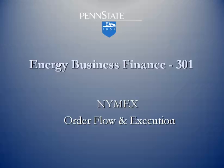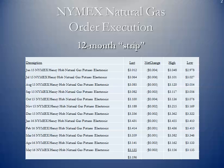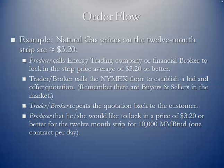Here's an example of a 12-month strip. Strips are just multiple pricing months, but you can get an average price. You can see here I took a one-year strip starting with June of 2015, and at the bottom of the last column you see that the strip price is approximately $3.20. We're going to use this as an example and walk through how this gets executed.